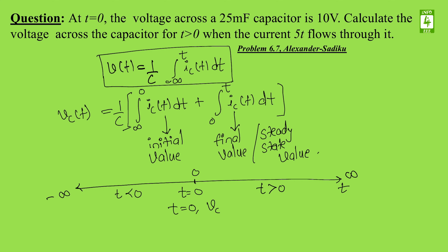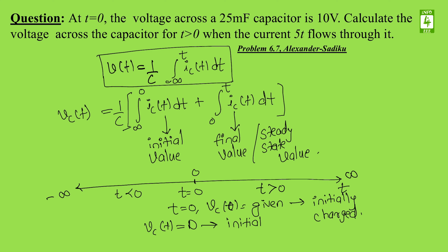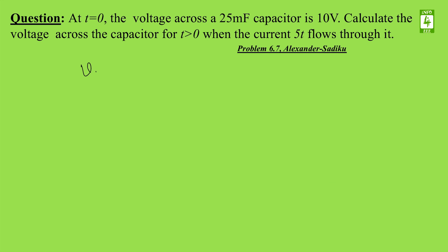For conceptual understanding, you should know one simple thumb rule: if a value of the capacitor at t = 0 is given, then the capacitor is initially charged. If the value of the capacitor at t = 0 is not given — meaning it is zero — then the capacitor is initially uncharged.